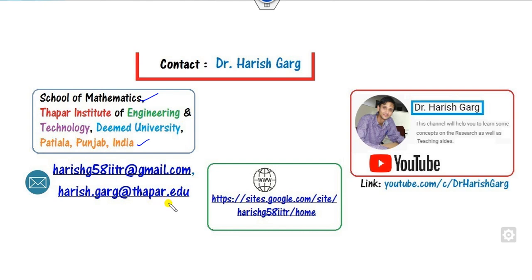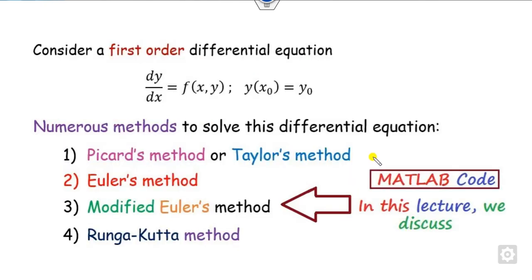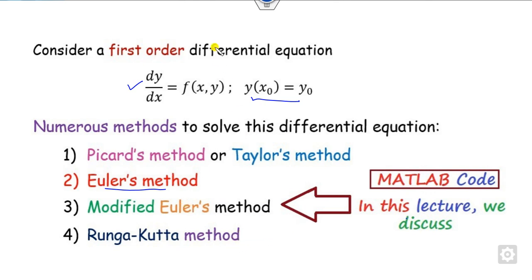You can contact me via either of my email IDs, or simply follow the link in the description for finding more updated videos. As we know, we can solve the first order differential equation dy/dx = f(x,y) provided an initial condition is given. There are many methods; in the last lecture we discussed the Euler method. Now in this lecture we will discuss how to construct the MATLAB code of the modified Euler method, followed by the Runge-Kutta method in our next lecture.